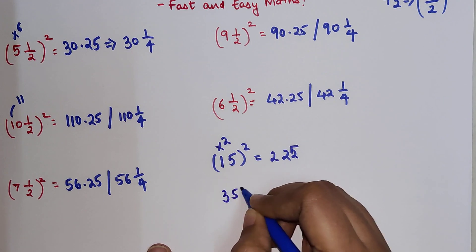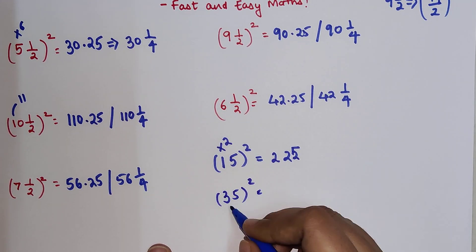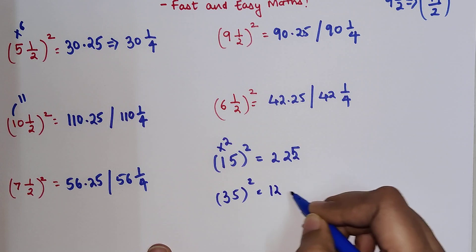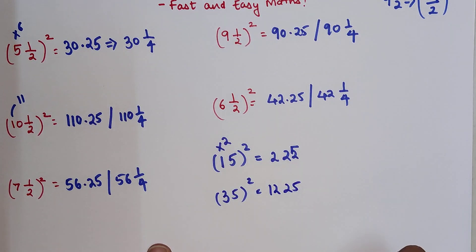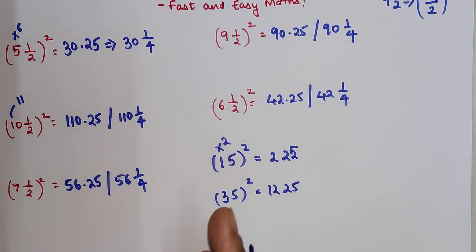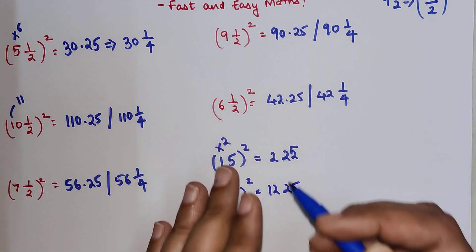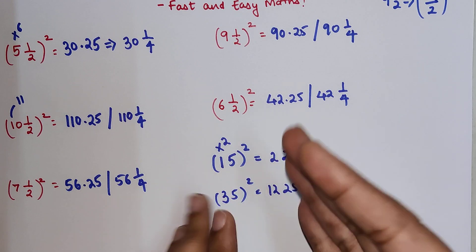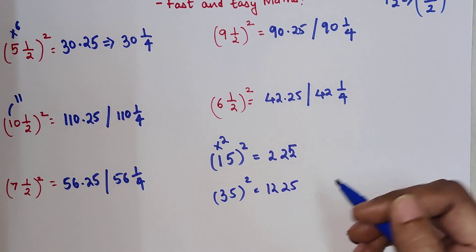Similarly, if you want to try for 35, this we can do it quickly. 3 into 4, which will get you 12, and then the next part is 25. If you have any doubts, you can go ahead and check your answers with the calculator. So now I have used the same trick over here, but in form of mixed form.